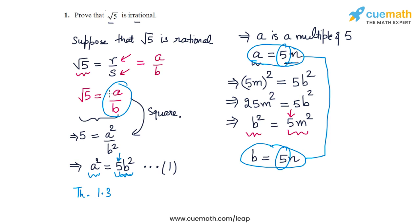So we started out by assuming that a and b have no common factor. But our analysis led us to the conclusion that a and b have a common factor of 5. So this is a contradiction. And this contradiction is happening because of our incorrect assumption of taking root 5 as a rational number a by b. So this assumption, this original assumption is incorrect.